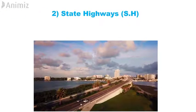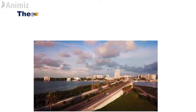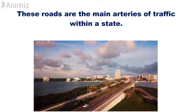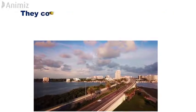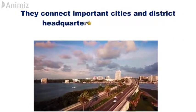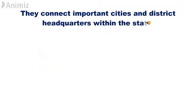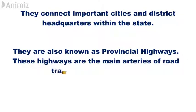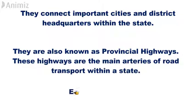2. State Highway. These roads are the main arteries of traffic within a state. They connect important cities and district headquarters within the state. They are also known as provincial highways. These highways are the main arteries of road transport within a state. Example: SH-7.